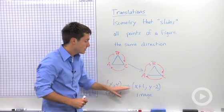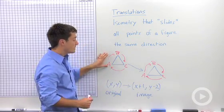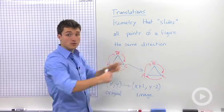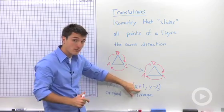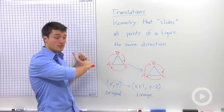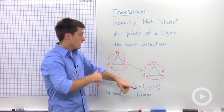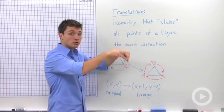You're going to use this rule to find which way you're going to translate. When you're adding to X, you're shifting your figure to the right. When you're subtracting from X, you're shifting your figure to the left. When Y is being added to, you shift your figure up. And when Y is being subtracted, you shift your figure down.